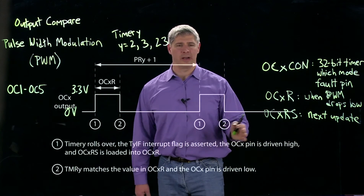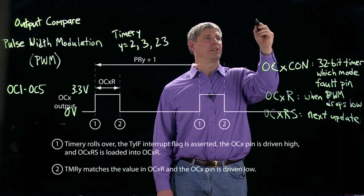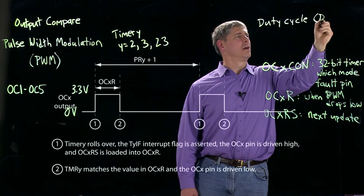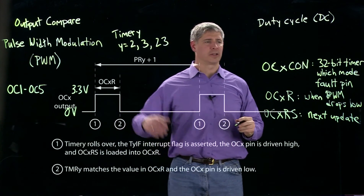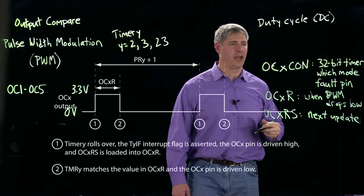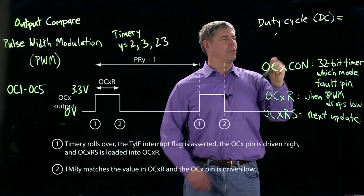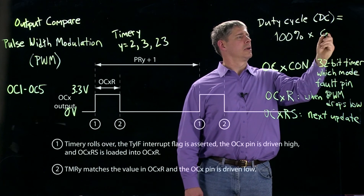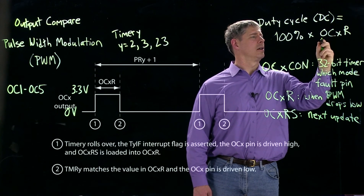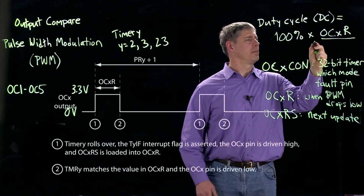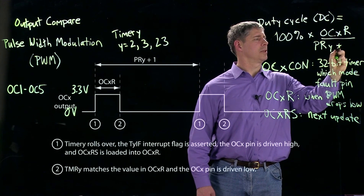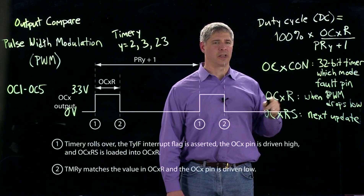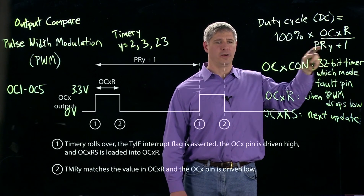When we talk about pulse width modulation, we often talk about the duty cycle of the pulse train. The duty cycle is simply the percentage of time that the signal is high, equal to 100% times OCXR divided by the period register PRY plus 1, where Y is the timer being used.